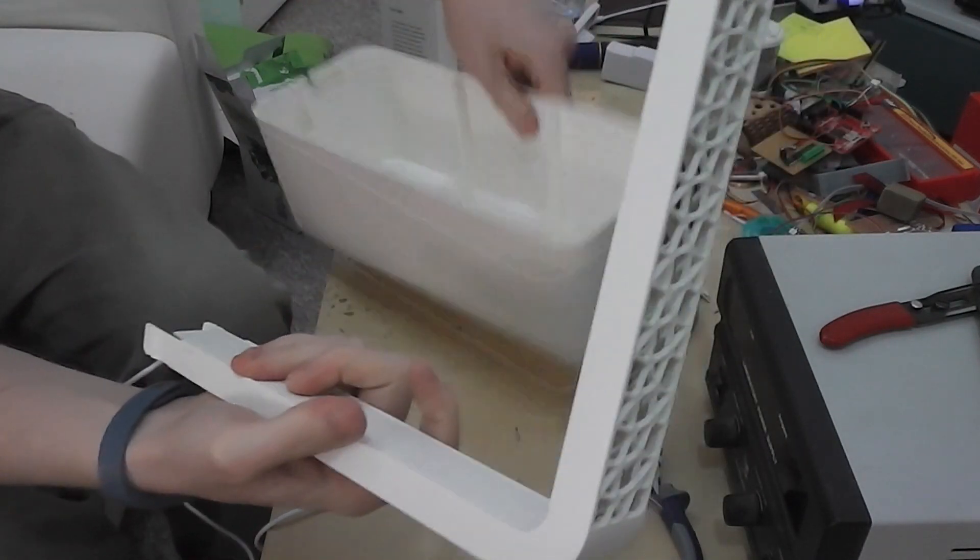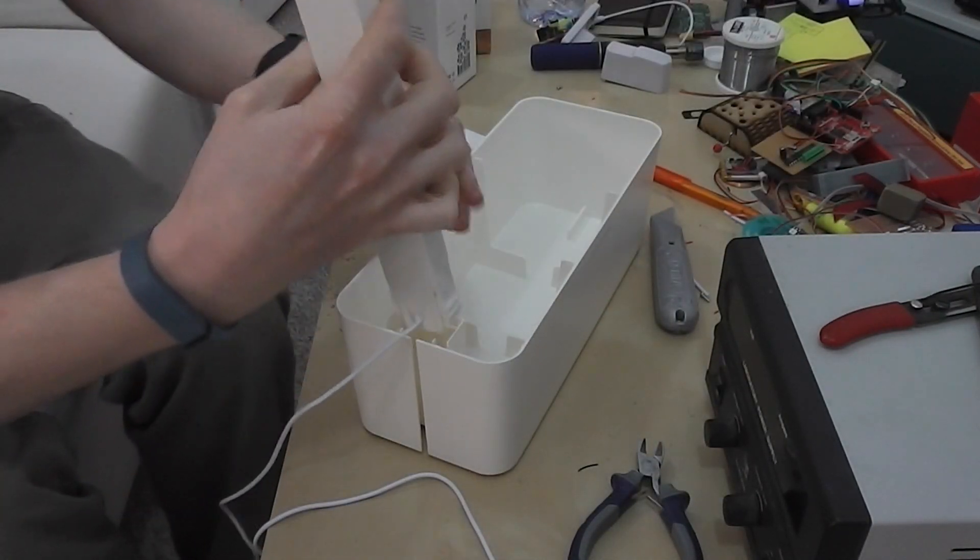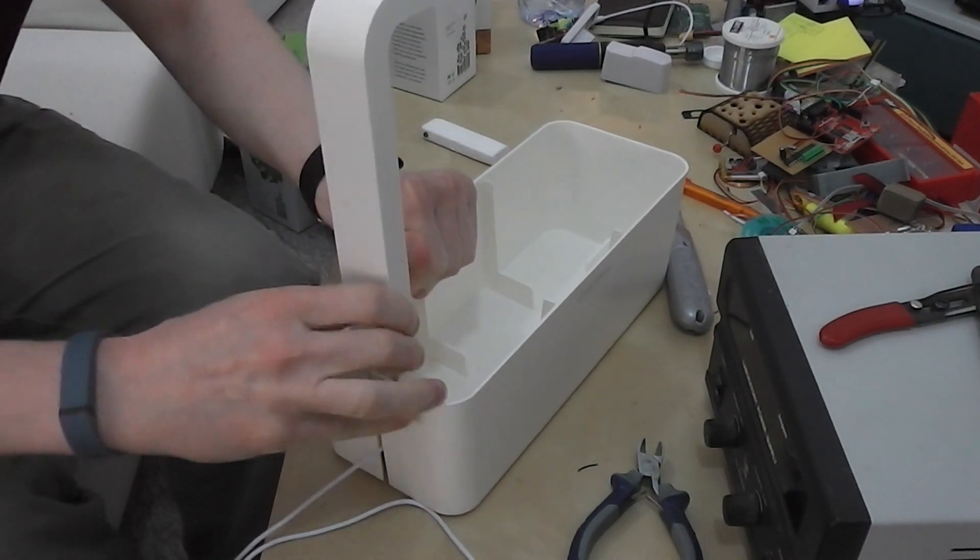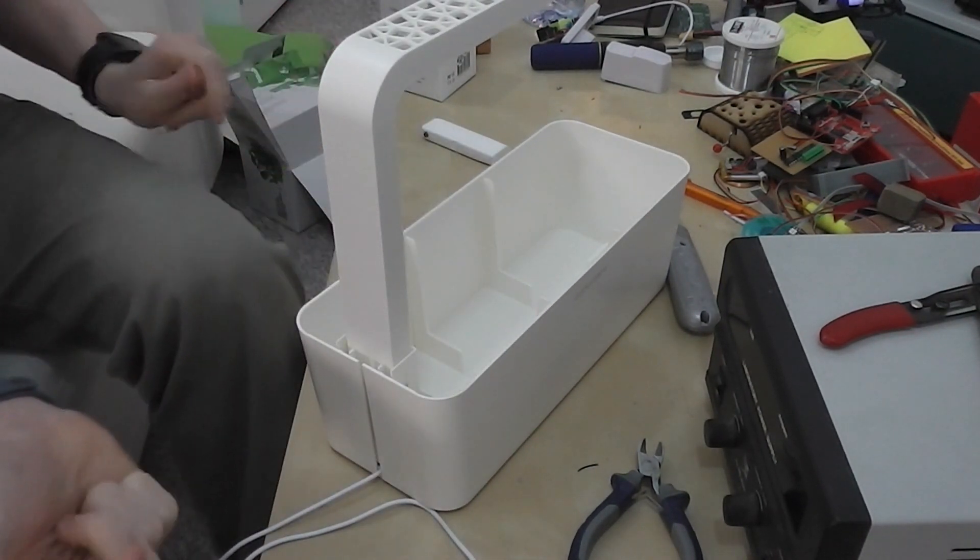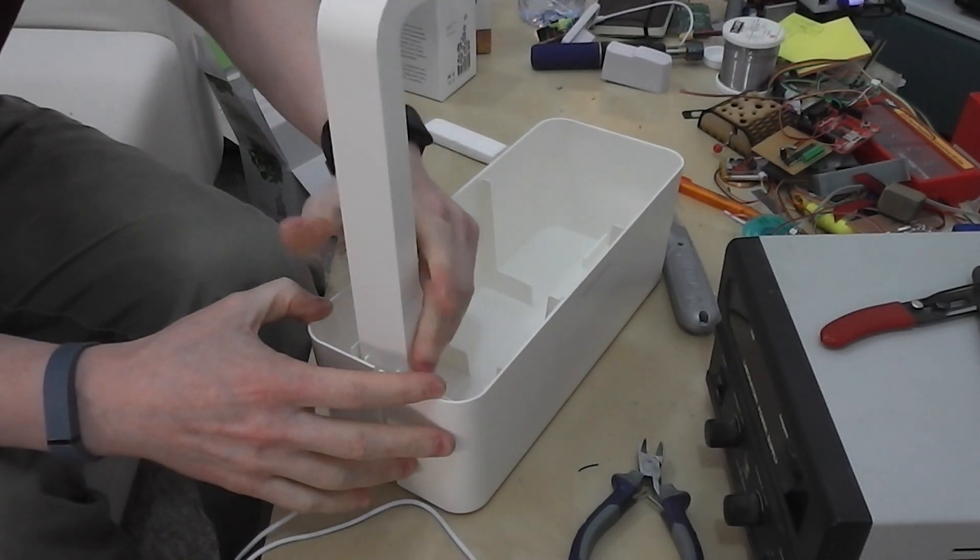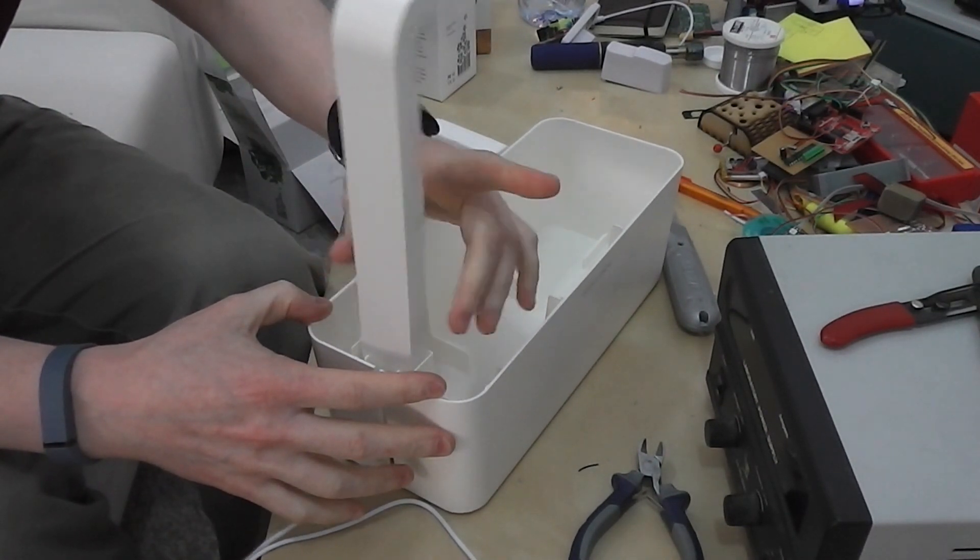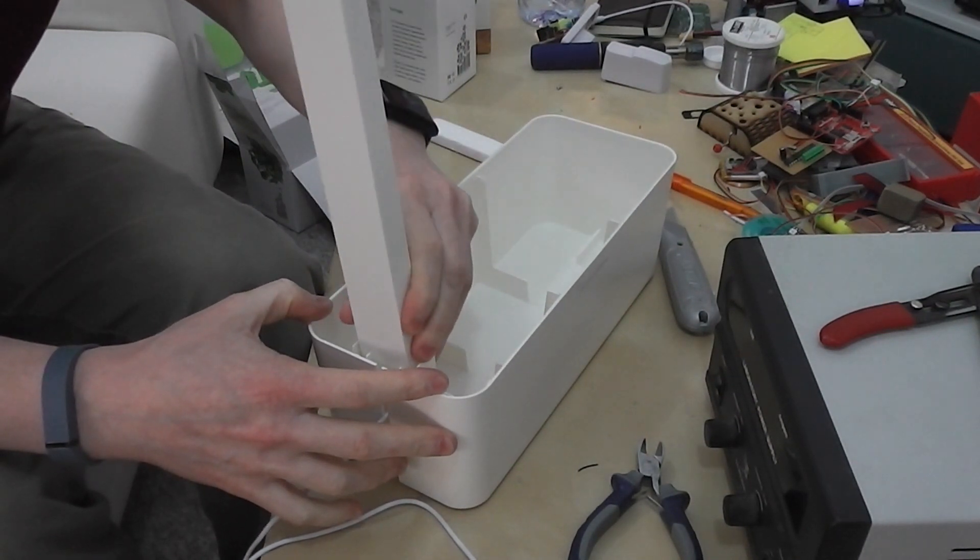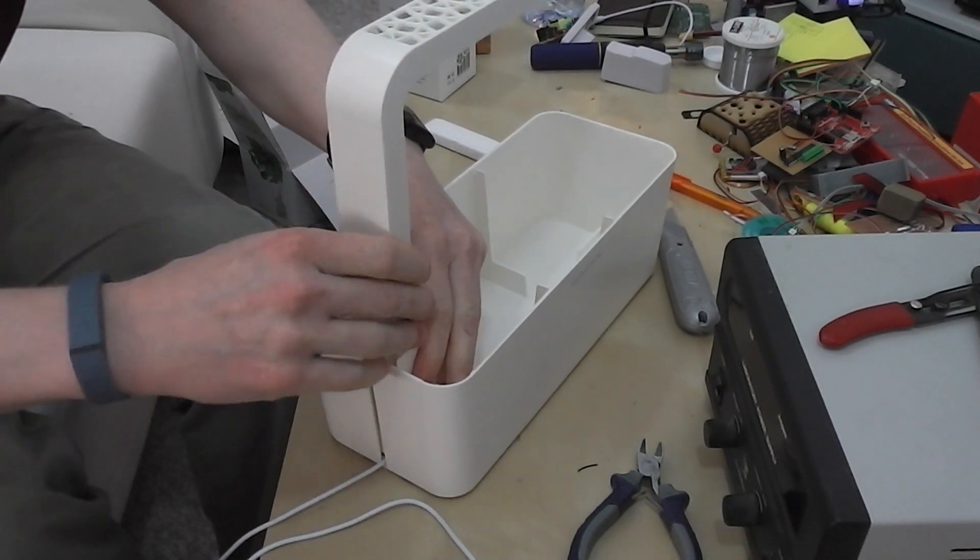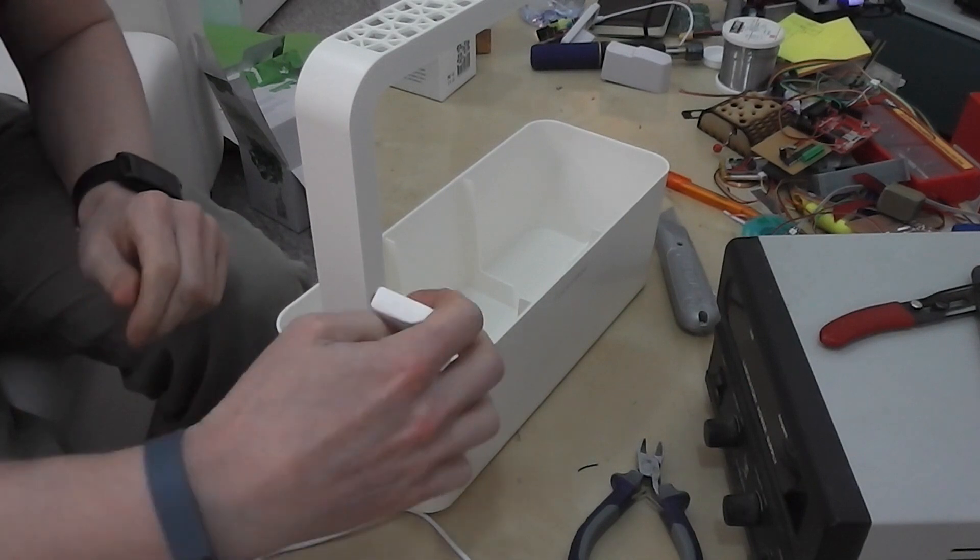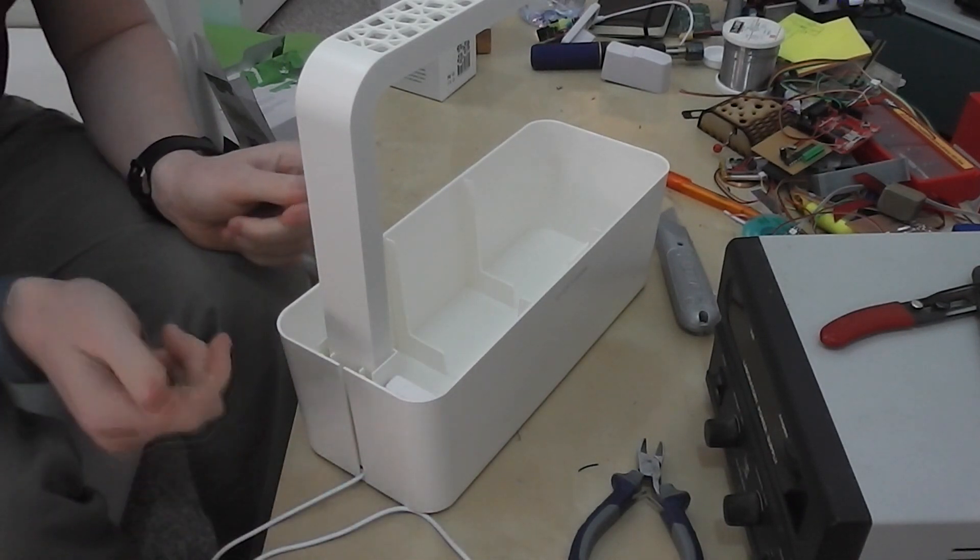The light arm just plugs, clicks into the side of the unit, like so. Like I said, it has a couple of different height adjustments. So as you put it up, you'll find it locks into each individual position.